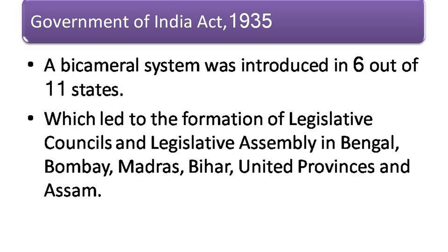A bicameral system was introduced in six out of eleven states, which led to the formation of legislative councils and legislative assemblies in Bengal, Bombay, Madras, Bihar, United Provinces, and Assam.